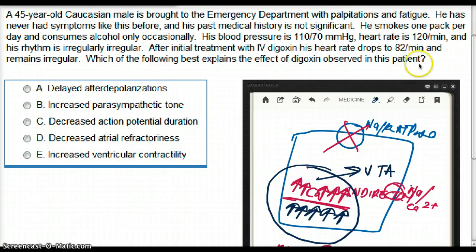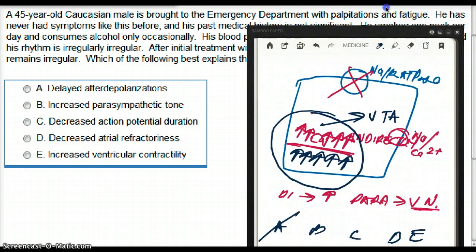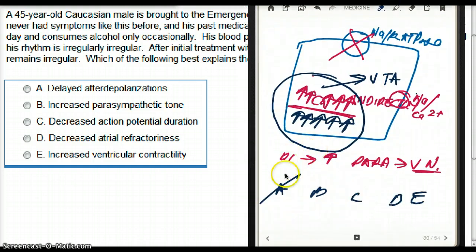I mean, it does happen with digoxin, but this is not what's happening in this patient. So be very careful when you're answering a question. So that's not the answer. Increased parasympathetic tone? Yes. Increased parasympathetic tone is the reason his heart rate is going down. So that is one of the choices. So I would think of that as an ideal choice. But let's see what about the other choices.